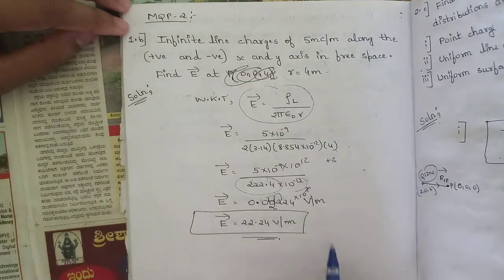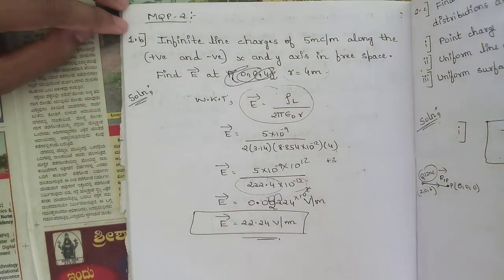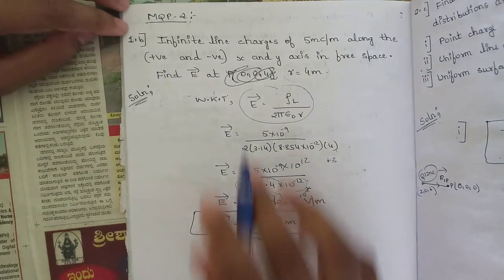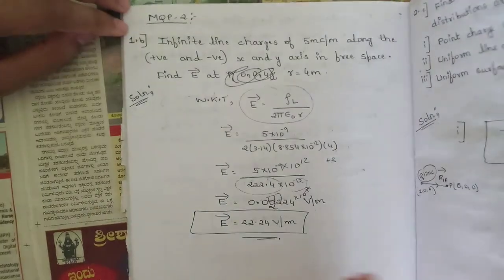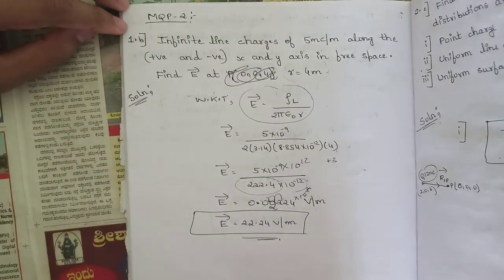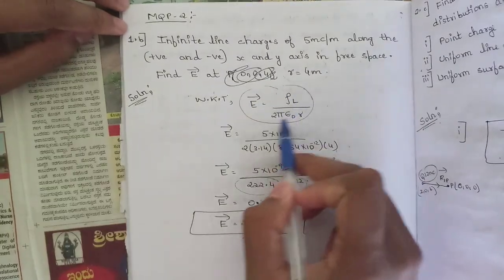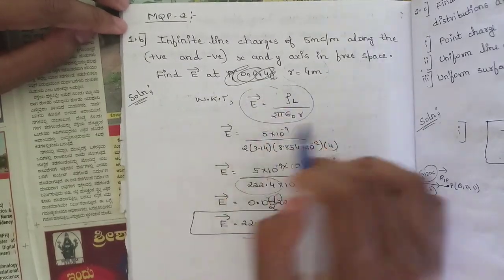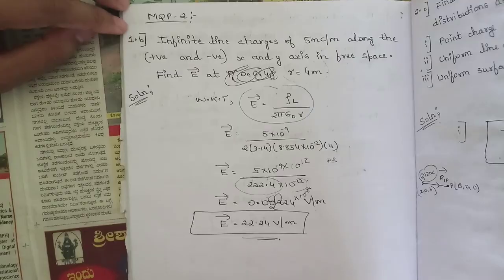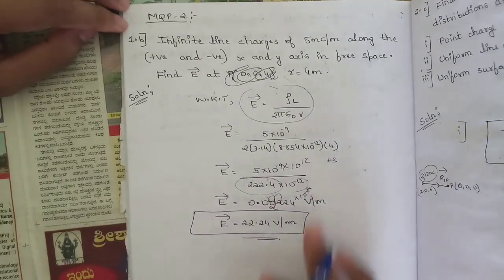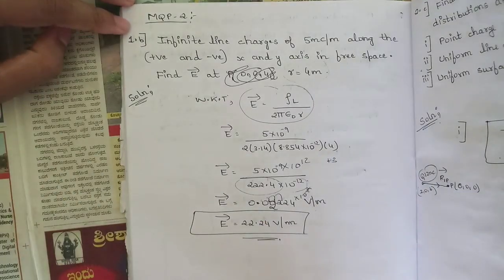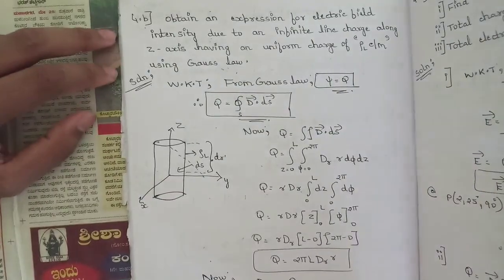So E is equal to 22.24 volts per meter. This was a simple, straightforward question. If you want to refer to the derivation of the expression ρl divided by 2πε₀r, it is covered in one of the model paper solutions. Pause the video and note it down.